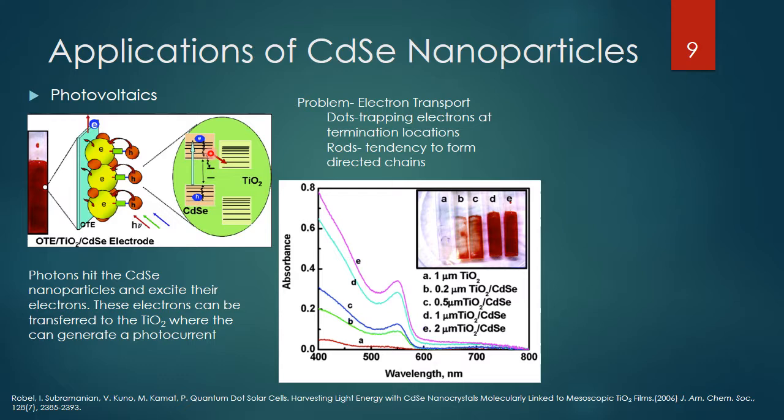With the larger bandgap, it would be a lot harder for this electron to fall back down to the unexcited energy level. Now that it's up there, it's a lot easier to generate a photocurrent based on the electron being in the excited state.